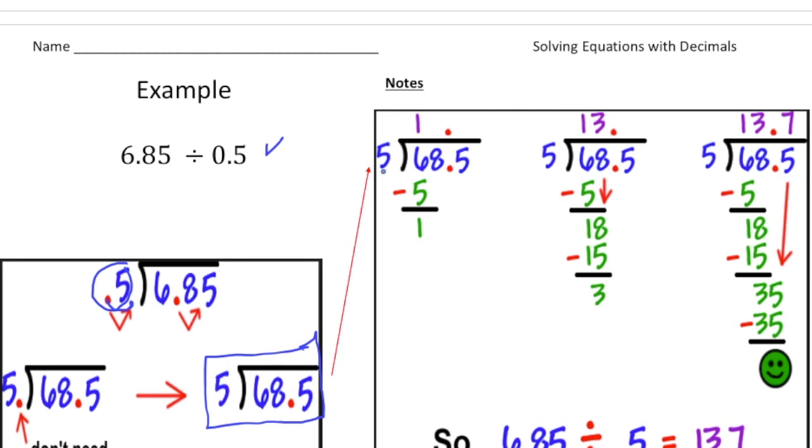So you got to say 5 goes into 6 one time. 1 times 5 is 5, and you subtract. 6 take away 5 gives you 1. And then you bring down the 8 to make it 18. And then you got to say how many times does 5 go into 18, and that's 3. 3 times 5 is 15. Subtract, you get 3 as a remainder. And then you bring down the 5, which is right here with the red arrow. And then 5 goes into 35 seven times, and 7 times 5 gives you 35 with a remainder of 0. So the answer is 13.7.